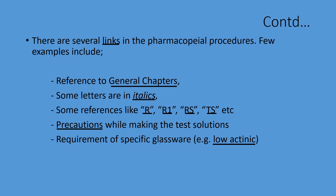What is low actinic? It sounds like a different word, but in fact it is light resistant glassware — to make it simple, it is the amber colored glassware. So you have to draft a detailed STP including all the above requirements from the pharmacopoeia. You cannot use the letters like R, R1, RS, TS, etc. as they are specifically referred to in the pharmacopoeia.